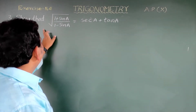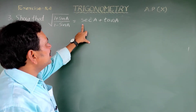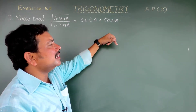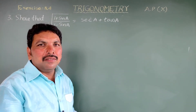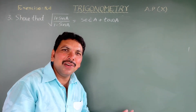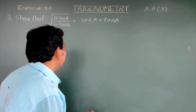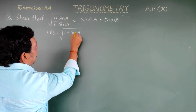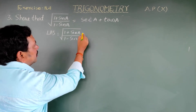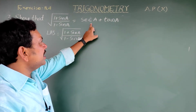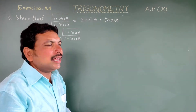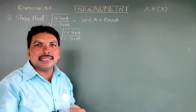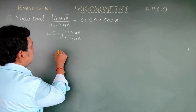Third question: show that the square root of (1 + sin A)/(1 - sin A) equals sec A plus tan A. In this sum, we take the LHS and show the RHS. LHS equals root of (1 + sin A)/(1 - sin A). The RHS is sec A plus tan A, so we multiply numerator and denominator by (1 + sin A).